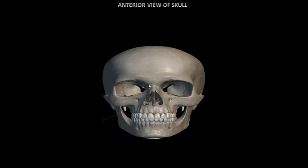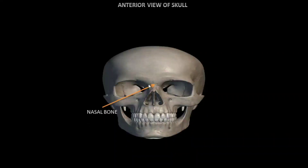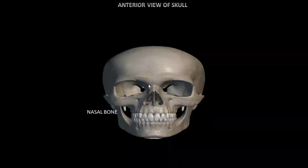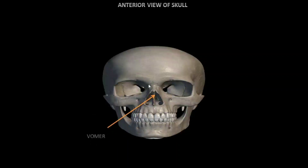The next bone is nasal bone. These are two small flat bones that provide structure to the nose. Next is the vomer — this is a thin flat bone which is